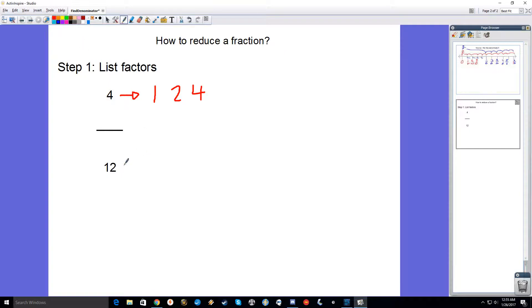For your denominator of 12, it's going to be 1, 2, 3, 4, 6, and 12. Now let's take a look at what numbers they have in common.